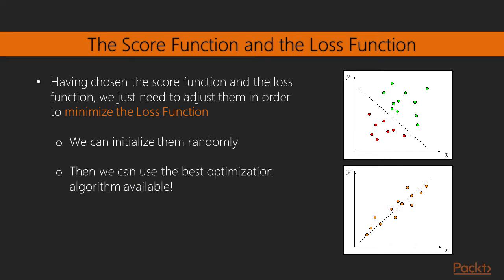Having chosen the score function and the loss function, we just need to adjust the weights in order to minimize the loss function. So we can initialize the weights randomly and then we can use the best optimization algorithm available to solve the problem.